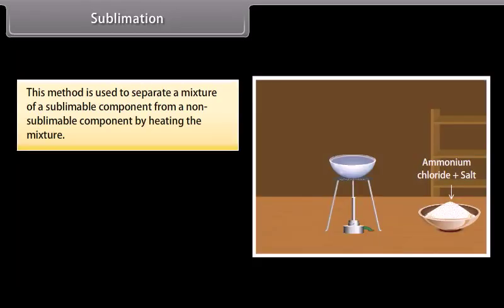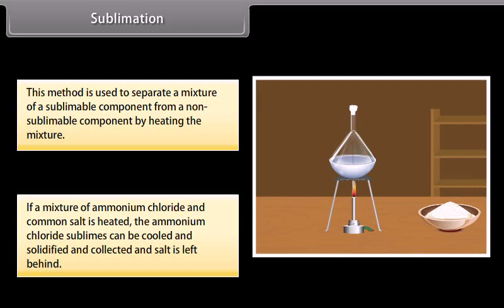Sublimation. This method is used to separate a mixture of sublimable component from a non-sublimable component by heating the mixture. If a mixture of ammonium chloride and common salt is heated, the ammonium chloride sublimes, can be cooled and solidified and collected, and salt is left behind.